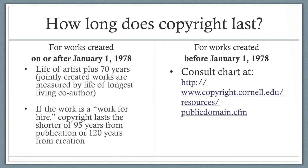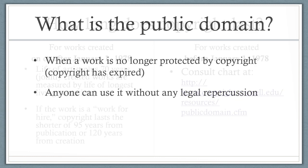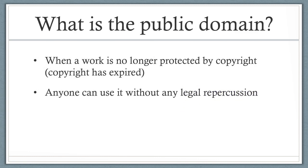For works created before January 1, 1978, I suggest you consult a chart at www.copyright.cornell.edu. At the end of the copyright term, the work is ejected into the public domain and is available for anybody to use without the author's permission. What is the public domain? When a work is no longer protected by copyright, the copyright has expired and anyone can use it without any legal repercussion.